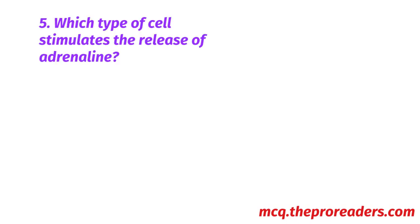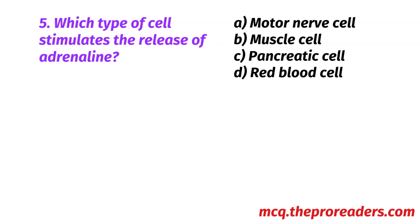Which type of cell stimulates the release of adrenaline? A. Motor nerve cell. B. Muscle cell. C. Pancreatic cell. D. Red Bull cell. Option A, Motor nerve cell, is the correct answer.